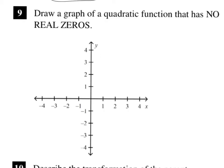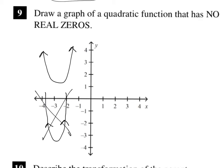No real zeros means the parabola cannot cross the x-axis. Remember not to draw a parabola that eventually would cross the x-axis. You can draw a parabola opening up as long as it's above the x-axis, or one opening down as long as it's below.